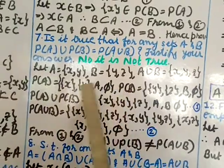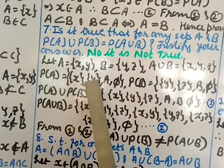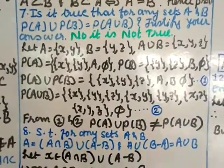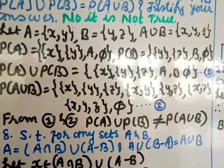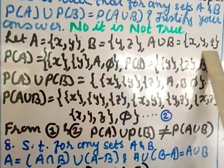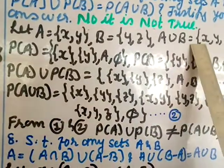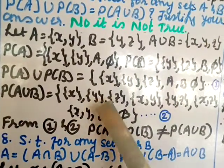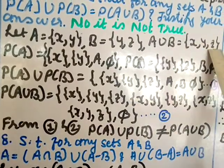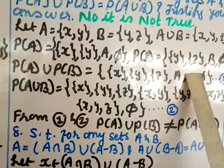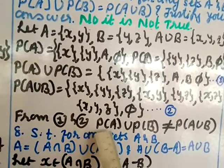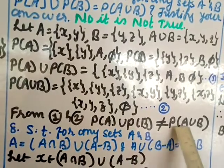P(A) ∪ P(B) = {∅, {x}, {y}, {x,y}, {z}, {y,z}}. But P(A ∪ B) = P({x,y,z}) = {∅, {x}, {y}, {z}, {x,y}, {y,z}, {x,z}, {x,y,z}}. Comparing the two, they are not equal — P(A ∪ B) contains elements like {x, z} and {x, y, z} that are not in P(A) ∪ P(B). Hence P(A) ∪ P(B) ≠ P(A ∪ B).